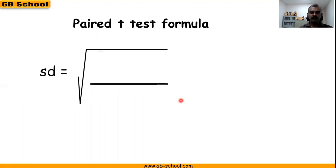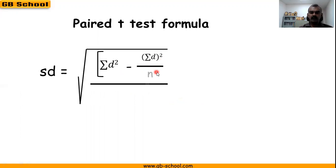The formula for sd is square root of sum of d square minus sum of d the whole square divided by n, and whole divided by n minus 1.